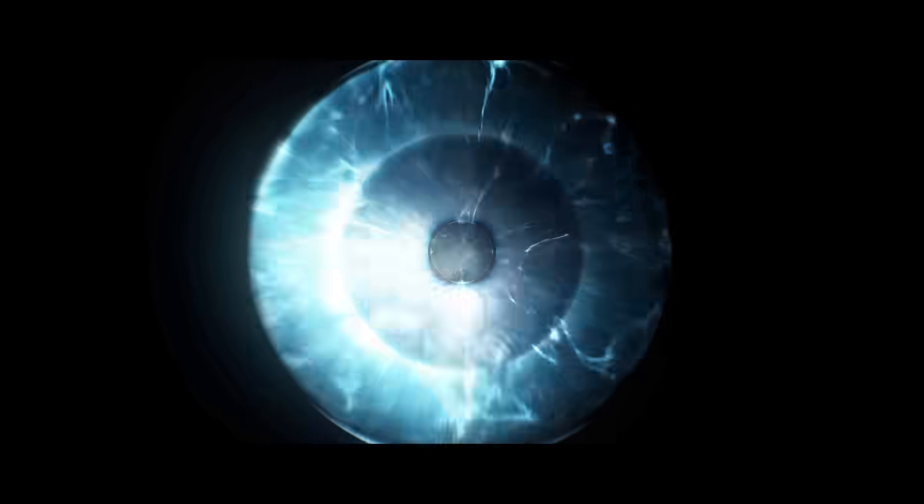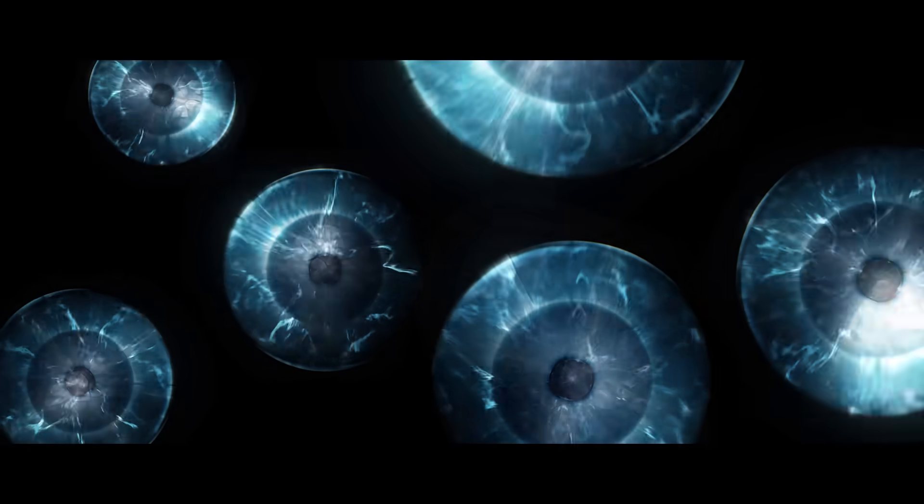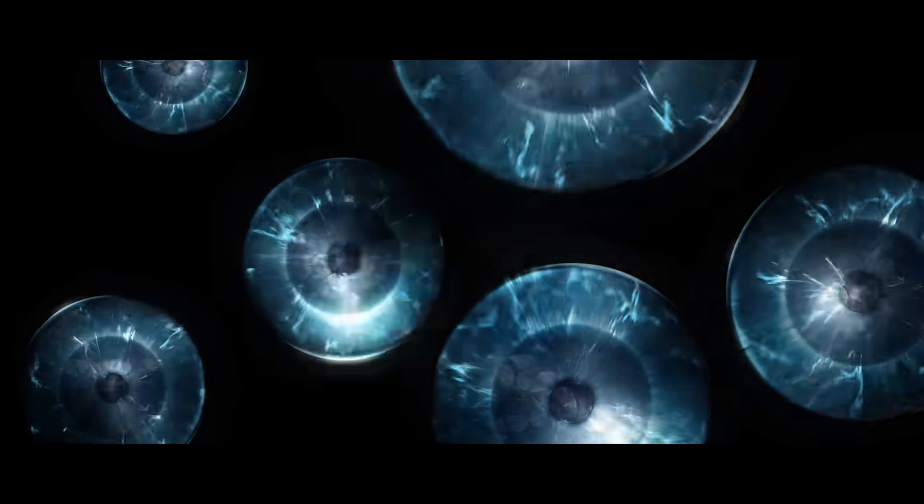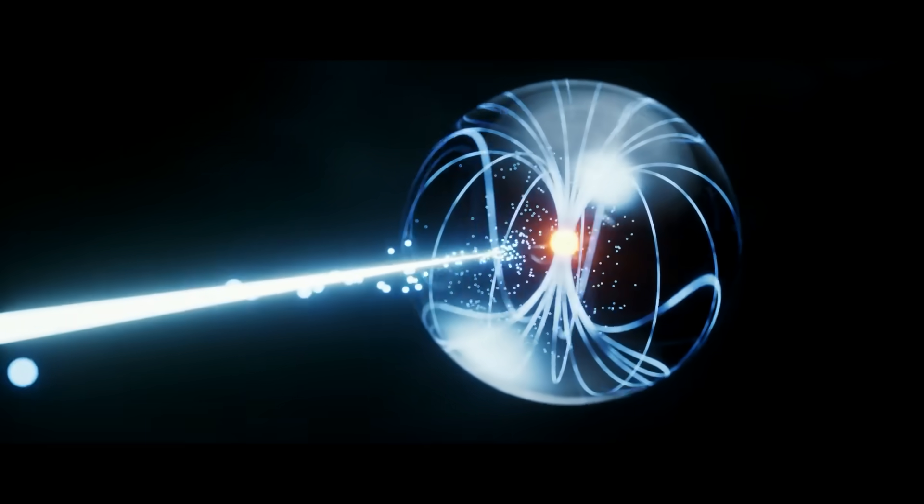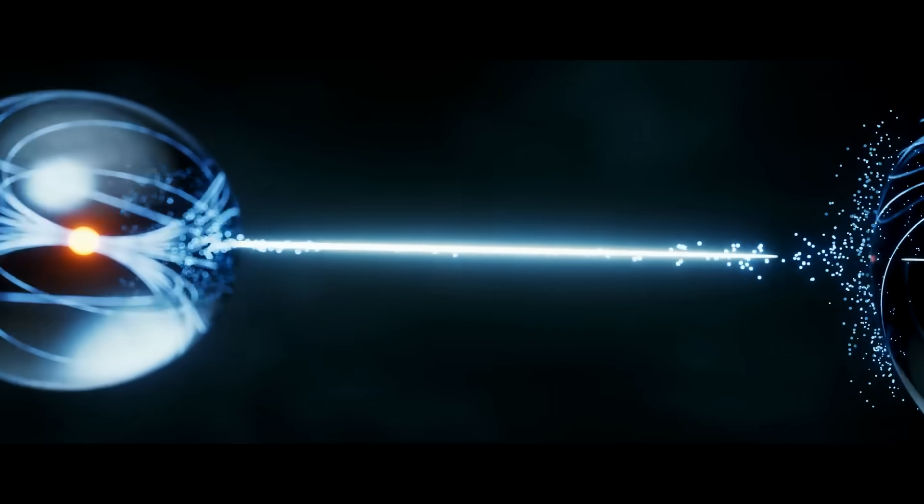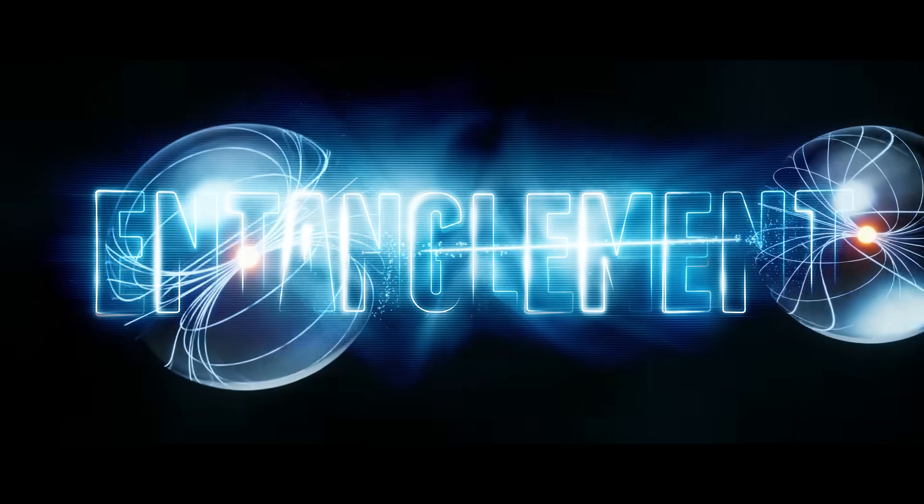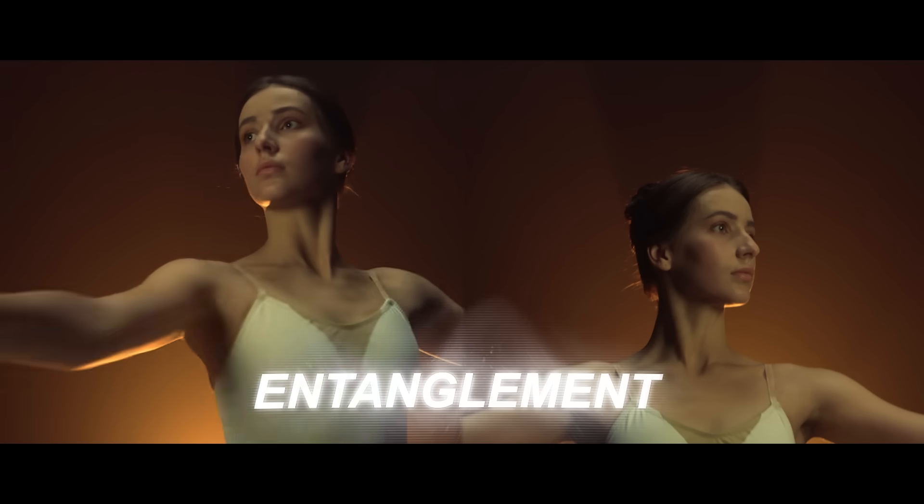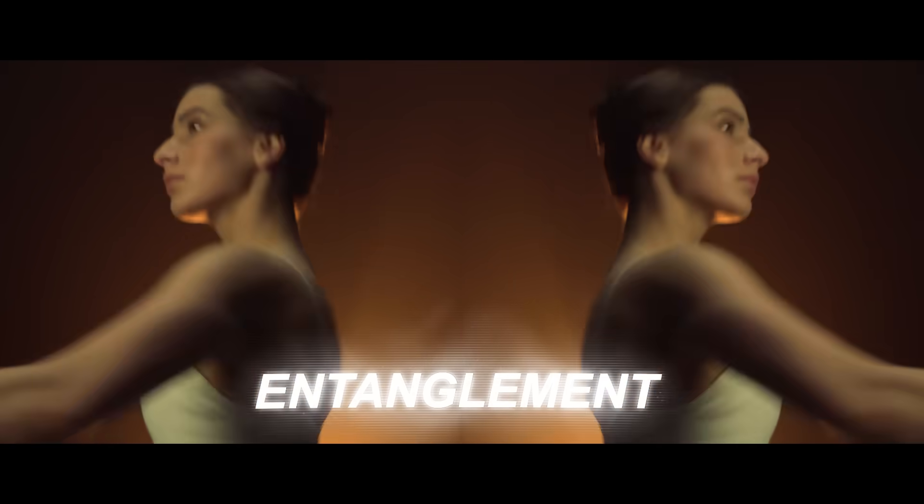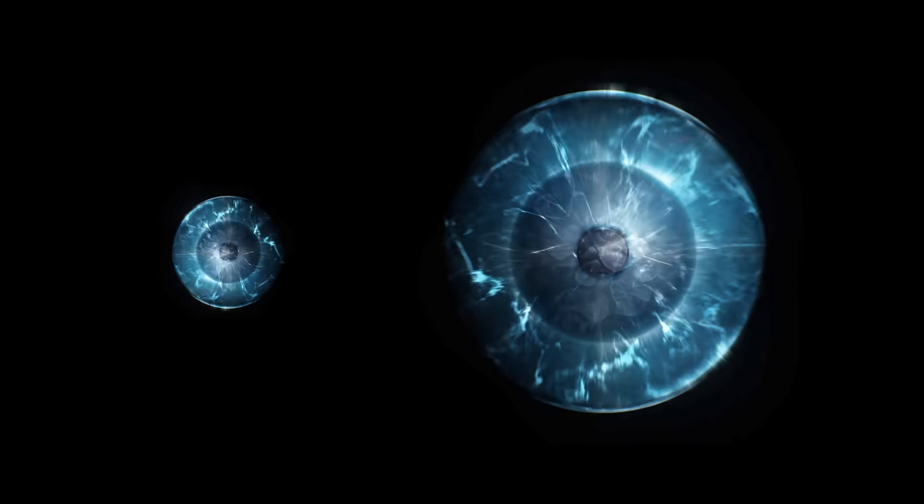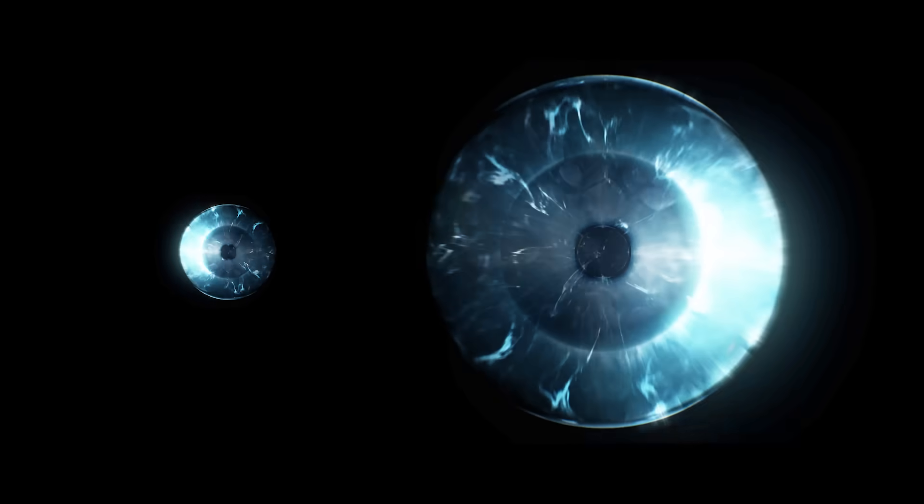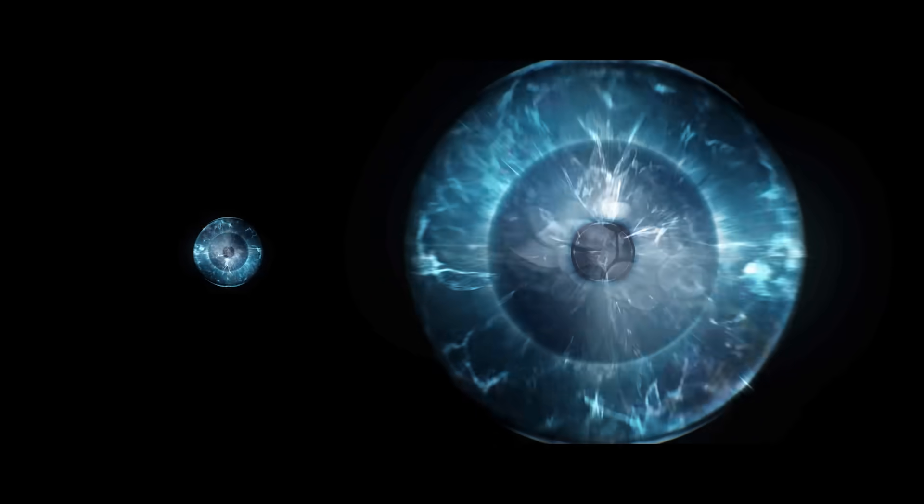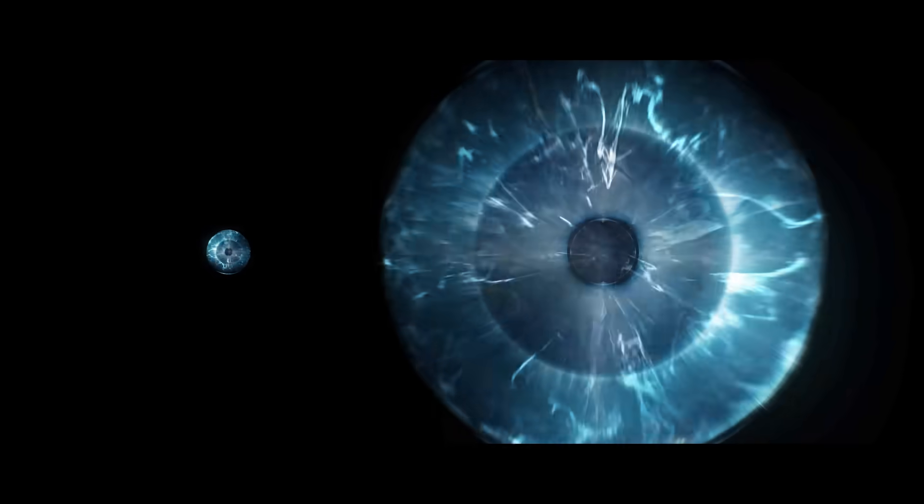But here is the problem. These quantum states are incredibly fragile. Quantum computers must be cooled to near absolute zero, colder than the void of space. Also, qubits are interconnected through a phenomenon known as entanglement. This is what Einstein referred to as spooky action at a distance. Now, imagine two synchronized human dancers. When one starts spinning clockwise, the other then spins counterclockwise. But entangled qubits are even stranger, as their synchronized dance happens instantly no matter how far apart they are, and faster than light itself could travel between them.